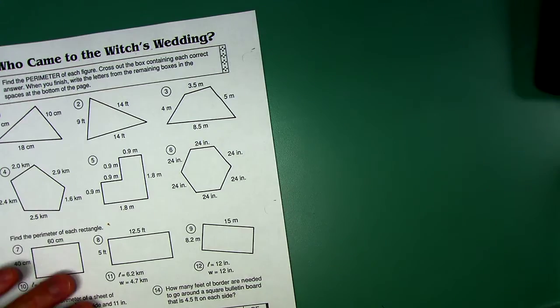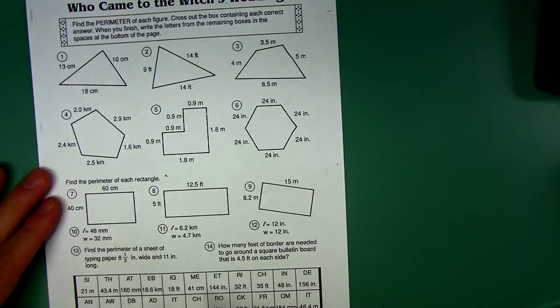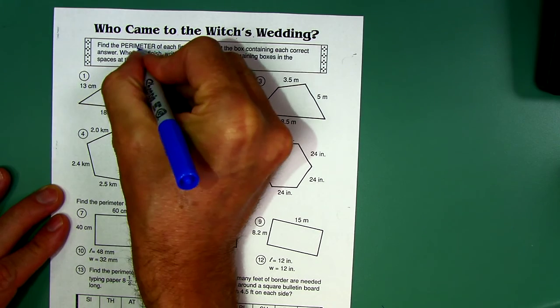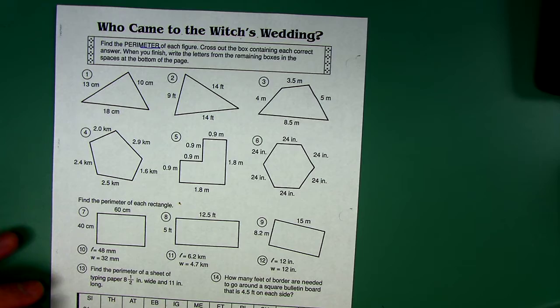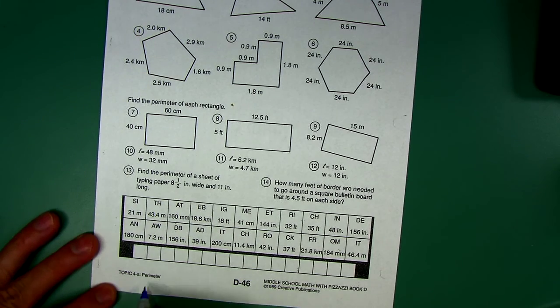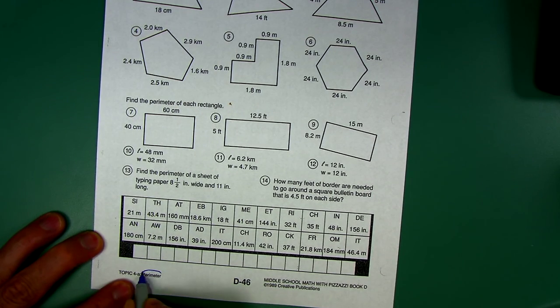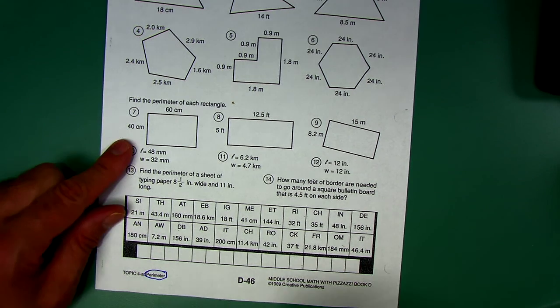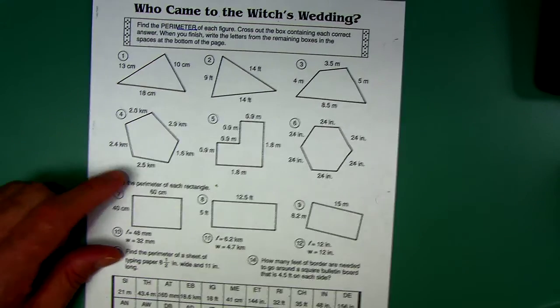Last thing I want to talk about real quick is this pizzazz worksheet you're going to do now. Follow the directions. It's very similar to the last one. We're going to find the perimeter. I want to show you again all these pizzazz worksheets have a topic. See down here? The topic is perimeter. Get used to circling those if you print them out.